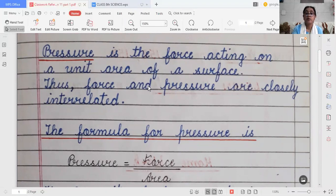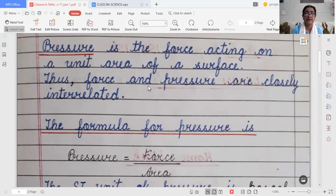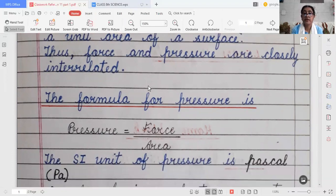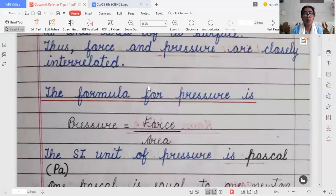The pressure is the force acting on an area of a surface. So that's why force and pressure are closely interrelated. So what will be the formula for pressure? Pressure will be equal to force upon area.